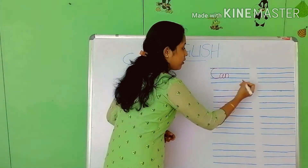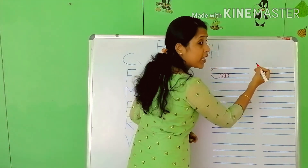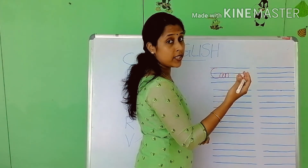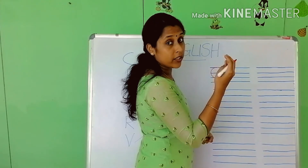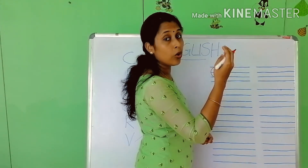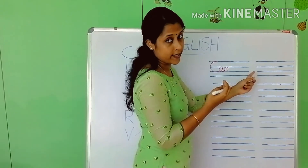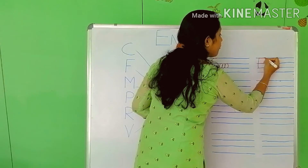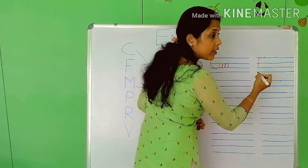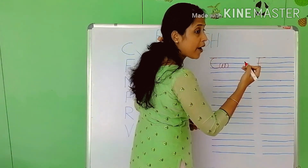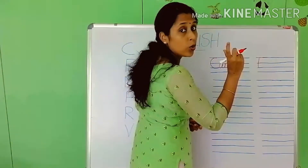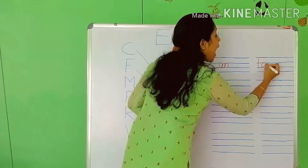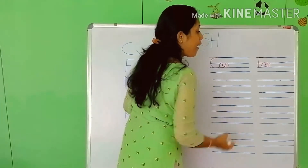Next — fan. When I say the word 'fan', which sound do you hear first? F. So it is the alphabet F that we write first. Write the alphabet F first. F, AN — when we hear the AN sound, we write A and N together. F-A-N — 'fan'.